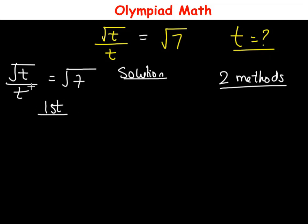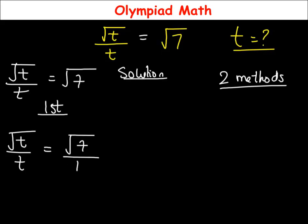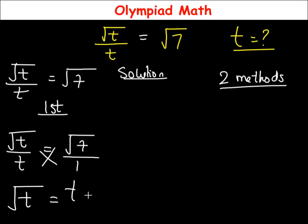The first method is that we can rewrite this equation in the form of √t over t is equal to √7. Now, √7 can be written as √7 over 1. With this, we can simply cross-multiply such that 1 multiplies √t and t multiplies √7. So 1 times √t is √t, equal to t times √7.